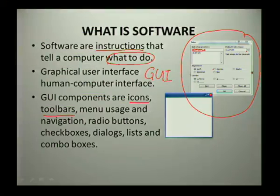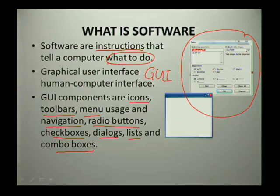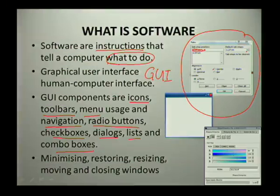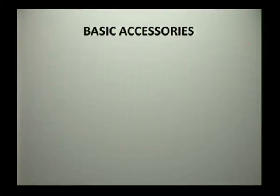GUI is part of our software which comes with your operating system. GUI components include icons, toolbars, menus, navigation, radio buttons, checkboxes, dialogs, lists, as well as combo boxes. Some of these you can find here — we have close, minimize, as well as maximize. These are some of the GUI components that allow you to interact with your computer, including minimizing, restoring, resizing, and closing windows.